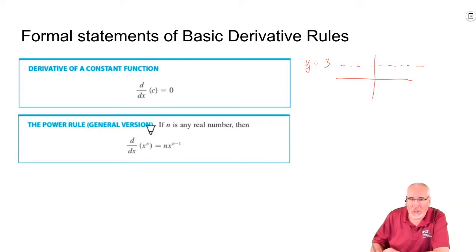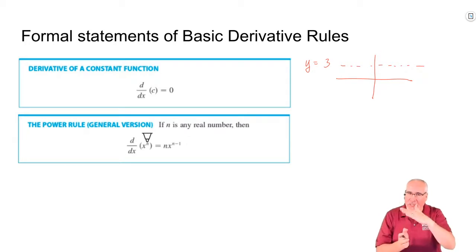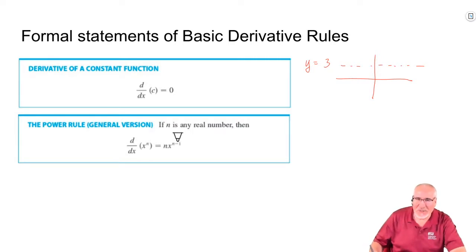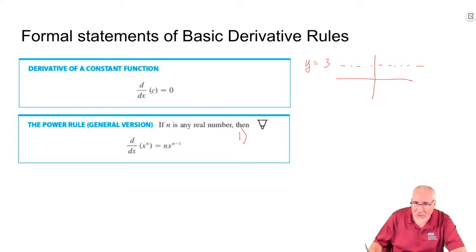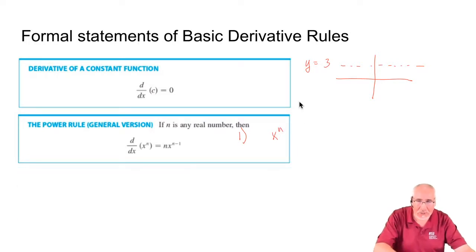The second rule: every time we take a derivative, the function behaves like one with an exponent reduced by one. A square root function acts like a linear; a cubic function's derivative is a quadratic. The method: first, bring the exponent down. So if I have x to the n, the first thing I do is bring that exponent down and multiply it by the coefficient.